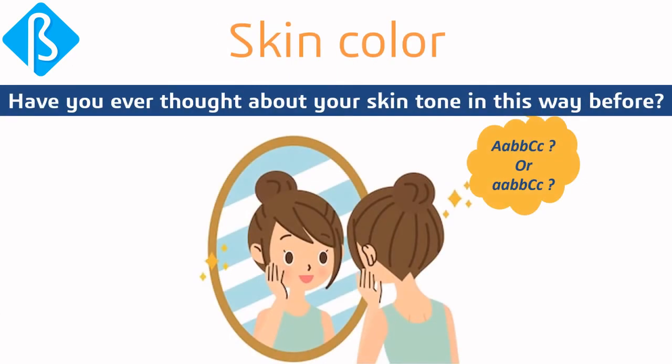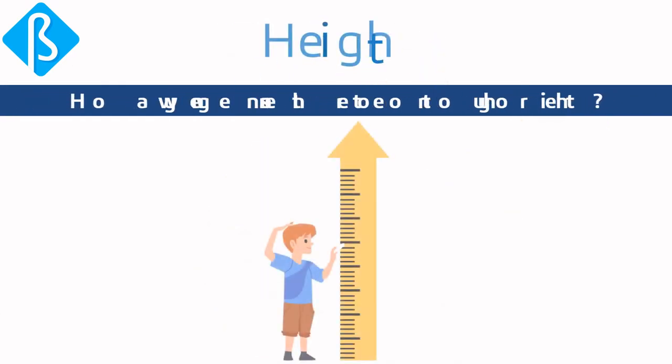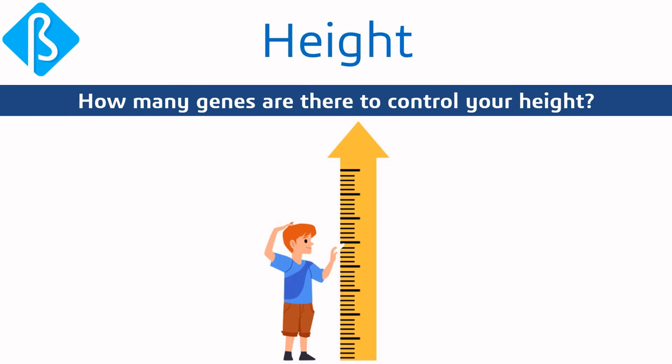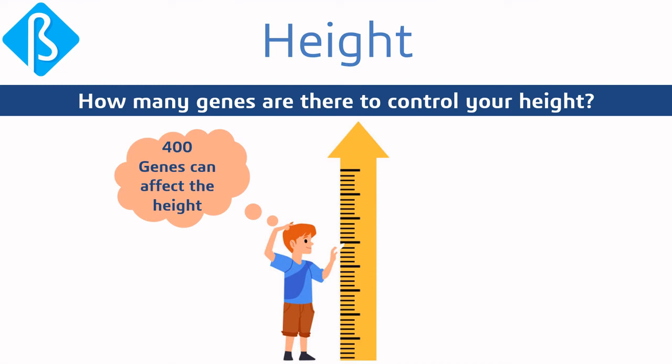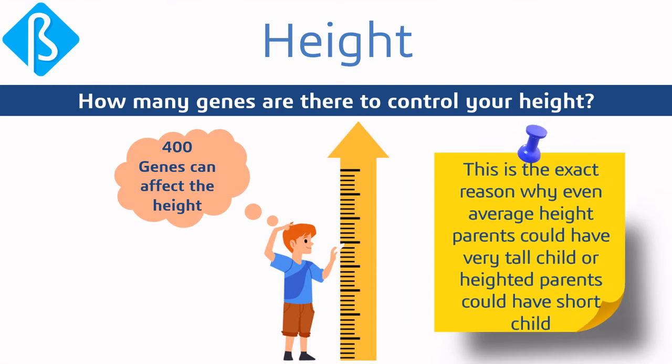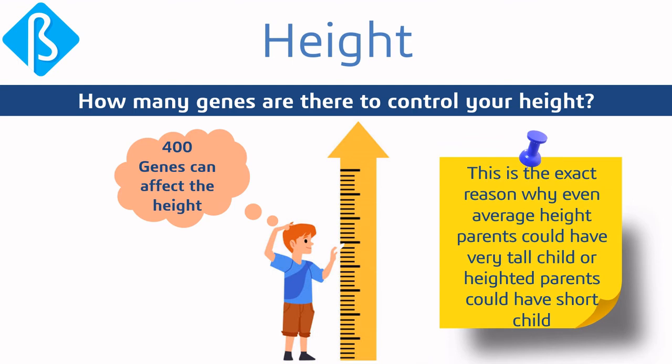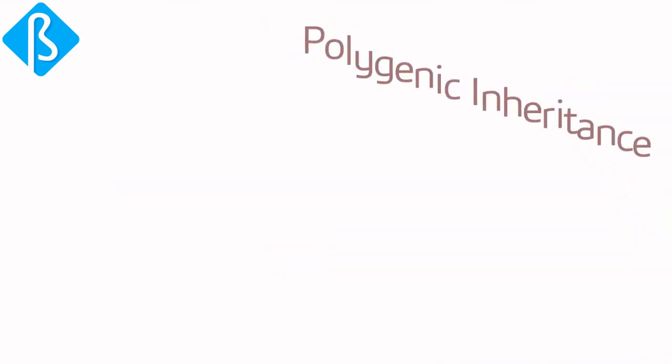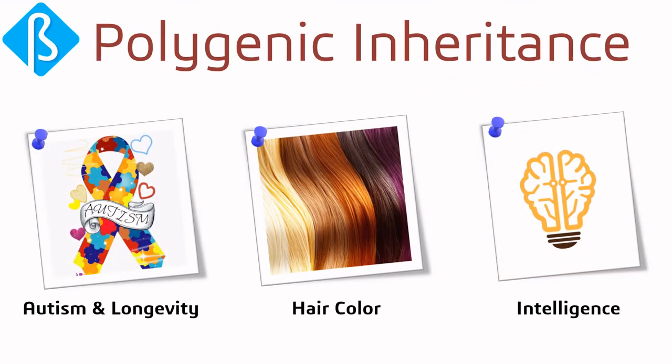Think about your height too — 400 genes can affect height. This is exactly why average-height parents could have a very tall child, or tall parents could have a short child. Apart from height, hair color, autism, longevity, and even intelligence are also examples of polygenic inheritance.